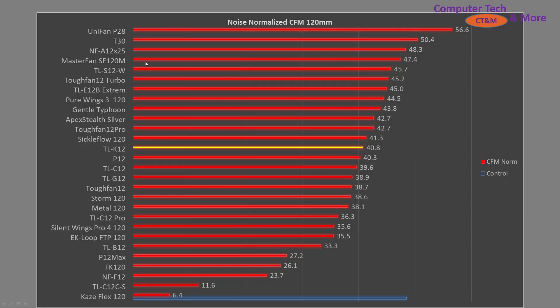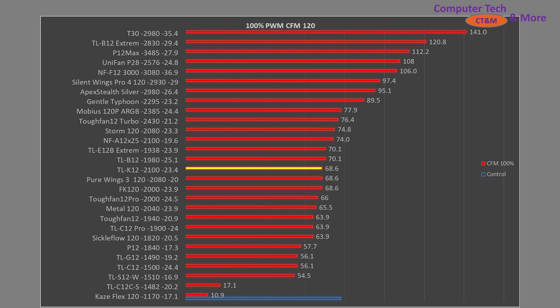For noise-normalized CFM results, the TLK12 sits in the middle of the pack—not bad, but not at the leading position seen in the CPU cooler airspeed test. At 100% PWM, it lines up right where you'd expect with other 2000–2100 RPM fans. No real surprises there.